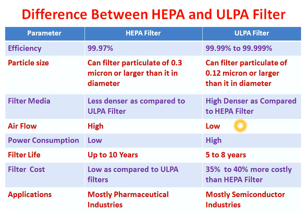Due to the greater pressure drop, the air passing through the ULPA filter is much less. Now for power consumption: the HEPA filter has low power consumption because its less-dense filter media places less load on the blower. In contrast, the ULPA filter has high-density filter media, which puts more load on the blower and results in higher power consumption.